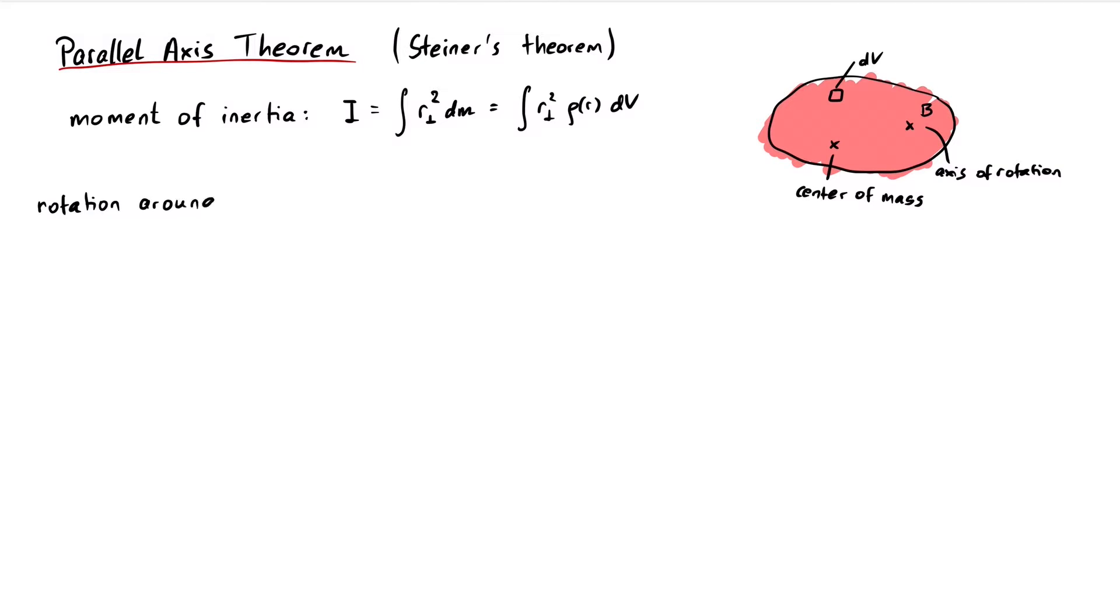The moment of inertia through the axis b is given by the integral over r perpendicular squared rho dv, where r perpendicular is now the vector from the axis b to the volume element. Instead of calculating this, we use the following trick.